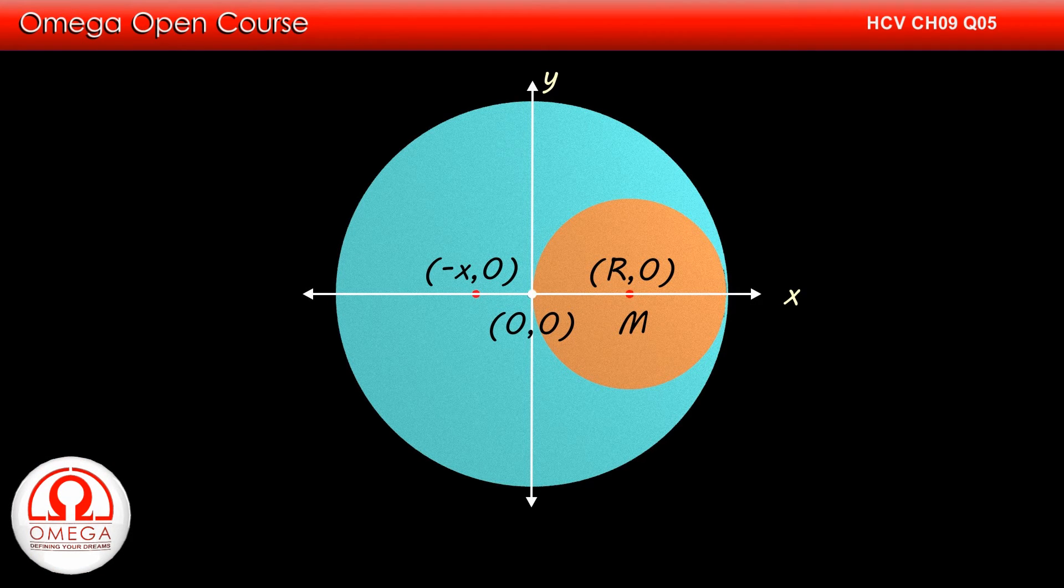Let the mass of the smaller disk be m. The radius of the larger disk is twice the radius of the smaller disk. Since the area of the disk is proportional to the square of radius, the area of the larger disk is 4 times the area of the smaller disk. The mass of the disk is directly proportional to its area.